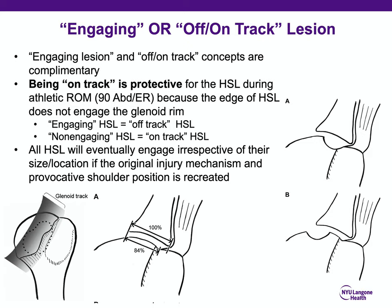The take-home message is that being on-track is protective for the Hill-Sax lesion. If the Hill-Sax lesion is on the glenoid tract, it will not engage the anterior rim of the glenoid during athletic range of motion — typically described as 90 degrees of abduction and external rotation. Whereas if the Hill-Sax lesion is located off the glenoid tract, or is large enough to fall outside the tract, it will engage in the provocative range of motion and result in dislocation.